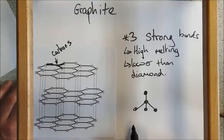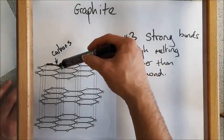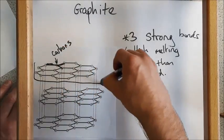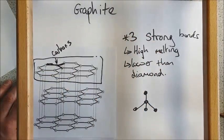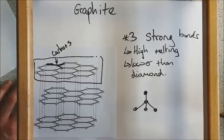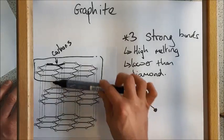The next thing that's really important is because it's only got three bonds, this represents one layer of graphite. Graphite exists in sheets, big flat structures with all of these carbons joined together.